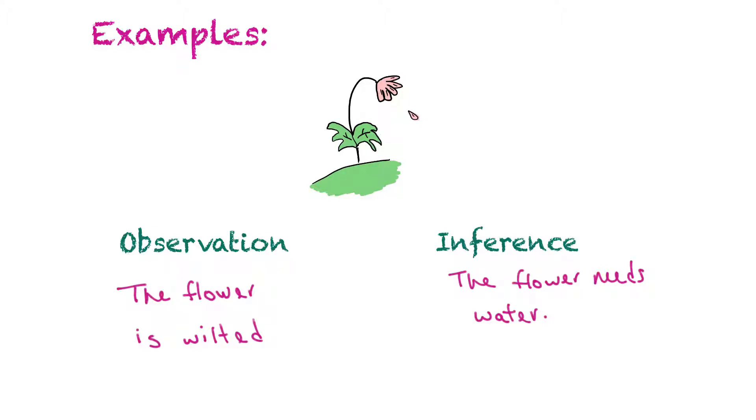So now we're going to work through some examples. The first example would be this picture of a flower, and the observation that I could make is that the flower is wilted. You can see that it's leaning over, the leaves are drooping, there are some petals falling off, and my inference could be that the flower needs water. It hasn't been watered in a long time, so it's wilting.